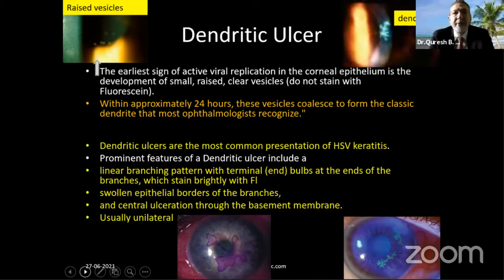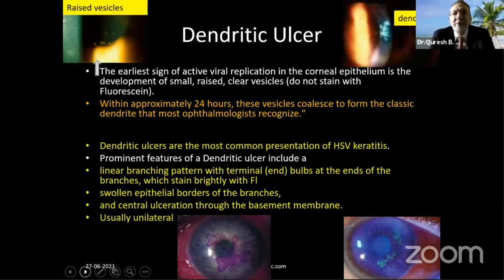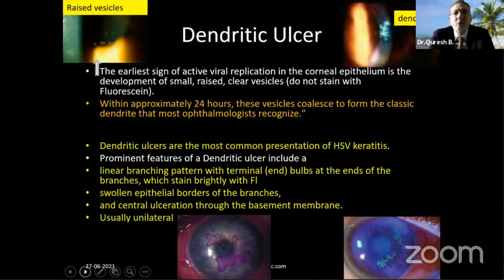What are the prominent features of a classic dendritic ulcer? It has a linear branching pattern with terminal bulbs at the ends of the branches. If you go to high power on the slit lamp and look at the rose bengal-stained image, at the end of each branch there is a terminal end bulb. It stains brightly with fluorescein and there are swollen epithelial borders of the branches.